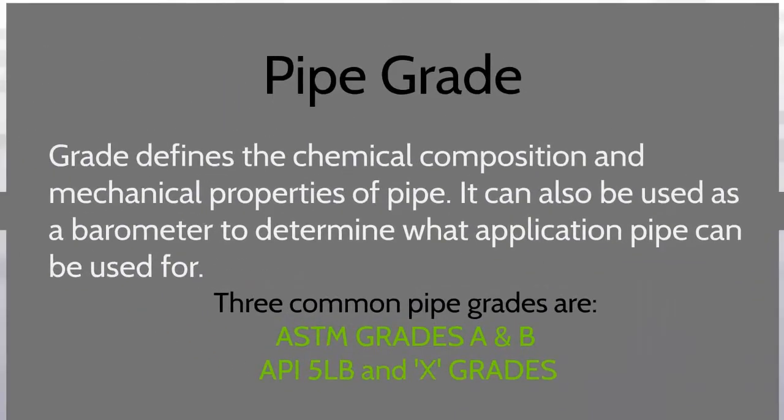The chemical composition and mechanical properties of pipe are defined by grade. Pipe grade can also be used as a barometer to determine what application pipe can be used for. Three common pipe grades are ASTM grades A and B, and API 5L B and X grades.